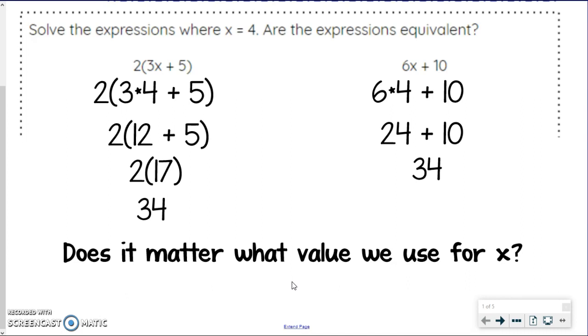Well, I'll go ahead and help you out. So hopefully you were thinking, yeah, they would still be equivalent no matter what value we use for x because of the property we know. If I use the distributive property here, 2 times 3x is going to give me 6x, and 2 times 5 is going to give me 10, and the addition stays the same. So that property tells us it's going to be equivalent. And so we're just proving that correct by using substitution.